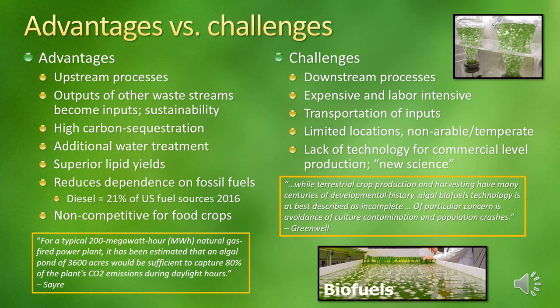There are clear advantages and challenges in microalgae aquaculture. Most advantages occur during the upstream cultivation process. Probably the biggest benefit is that microalgae can use the outputs of other waste streams as inputs to its own — a key concept in sustainability science that embraces a closed waste cycle rather than a linear one. The carbon sequestering capacity of microalgae is also attractive: a great deal of carbon can be assimilated by photosynthesis, and flue gases are among the top anthropogenic contributors to global warming. According to the EPA, the industrial sector contributed 21% of all US greenhouse gases in 2014.